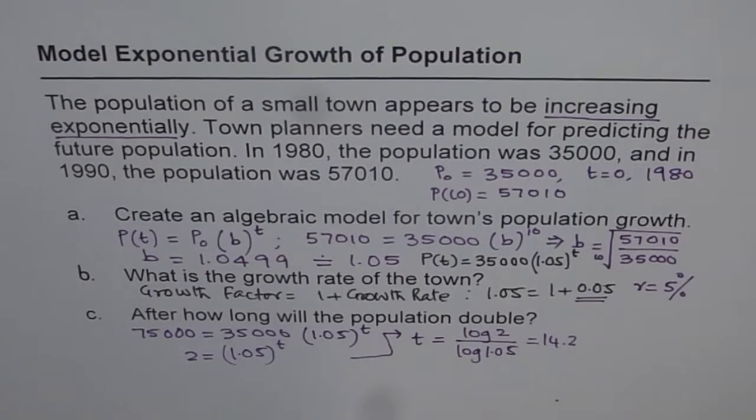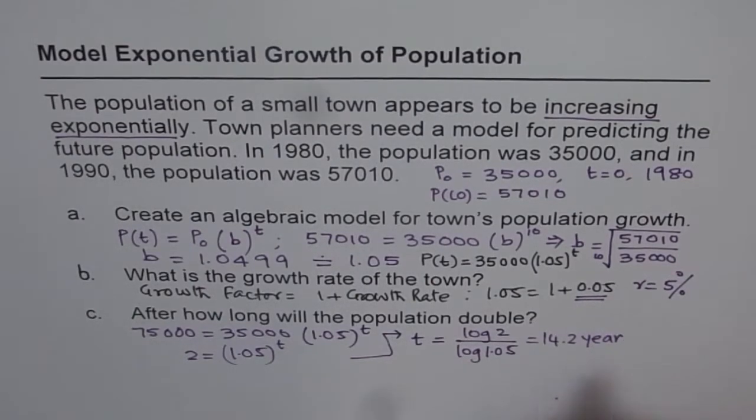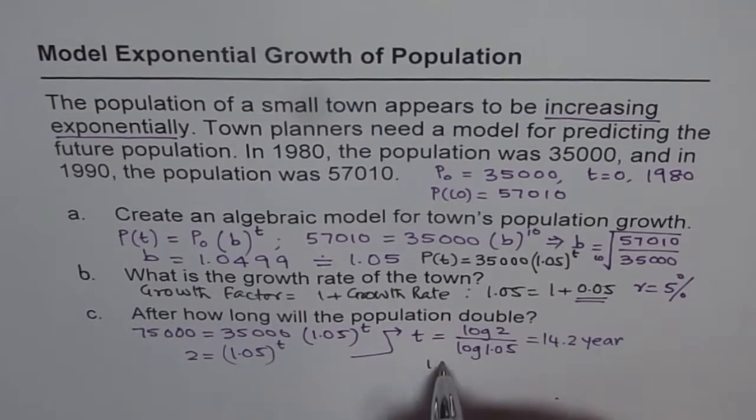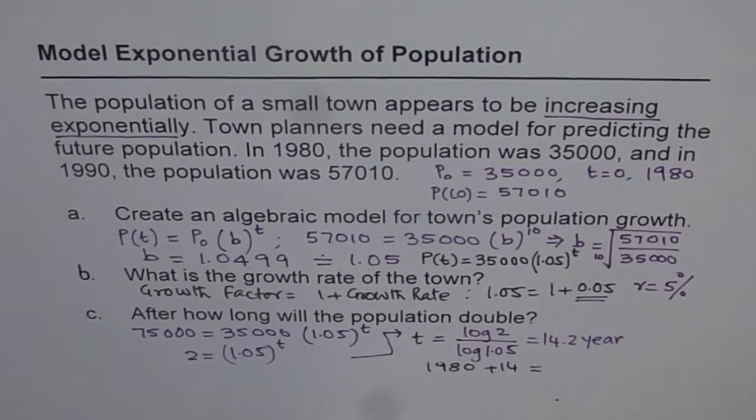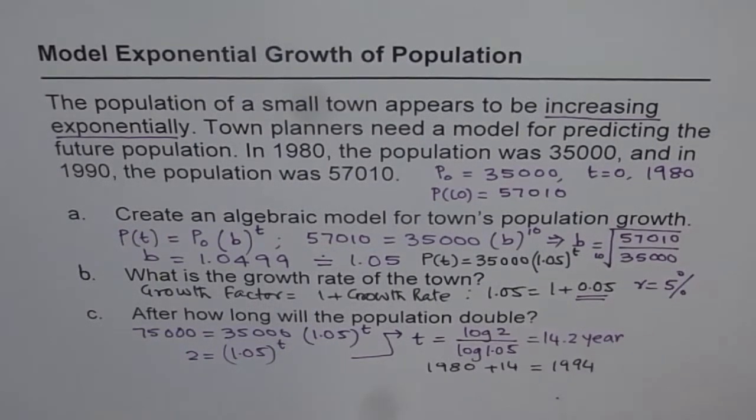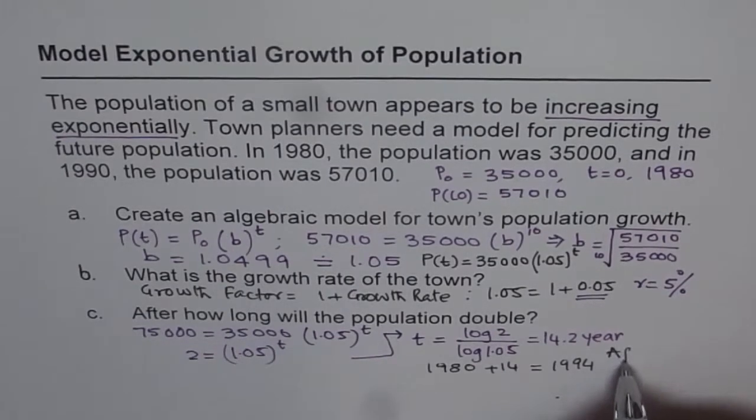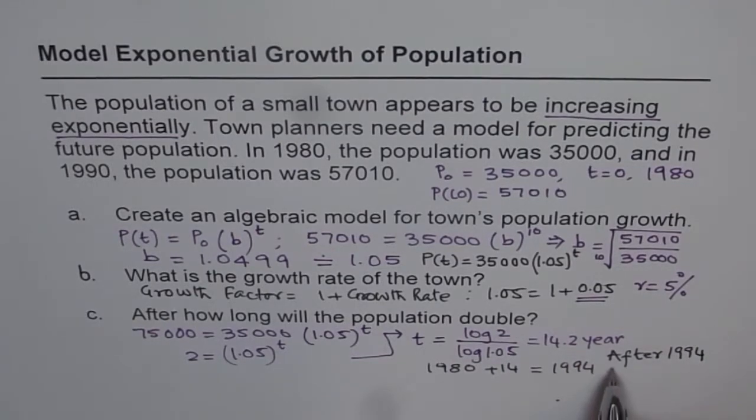So after how long will the population double? It is after 14.2 years. 14.2 really means that we started with 1980. So 1980 plus 14 gives us equals to 1994. So after 1994 it will double. The answer is after 1994 when it is going to double. So that is how we can answer these questions.